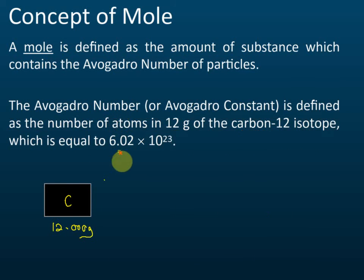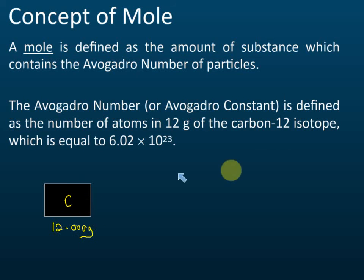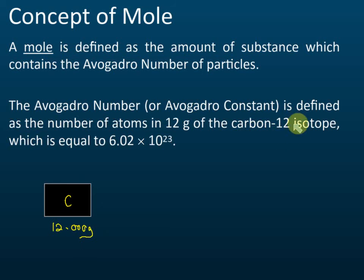Scientists take carbon-12 and count how many particles are inside 12.000 grams of carbon. We said scientists take 12.000 grams of this carbon-12 isotope. They take 12 grams because this is carbon-12 and the relative atomic mass of carbon-12 is 12. They take these 12.000 grams of carbon and count how many atoms or particles are inside.